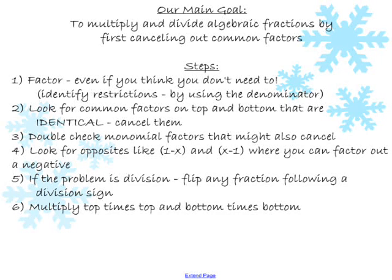So our steps are going to be first to factor, even if you think you don't need to. Identify restrictions by using the denominator. Look for common factors on the top and the bottom that are identical and cancel them out. We're going to double check for monomial factors that might also cancel. These steps should look very familiar to you. They're almost the same as simplifying fractions. You're going to look for the opposites to see if those cancel.